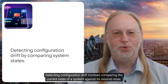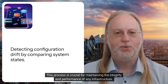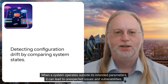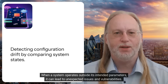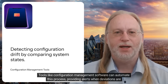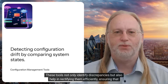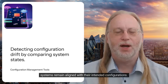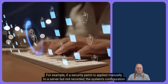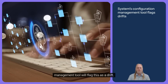Detecting configuration drift involves comparing the current state of a system against its desired state. This process is crucial for maintaining the integrity and performance of any infrastructure. When a system operates outside its intended parameters, it can lead to unexpected issues and vulnerabilities. Tools like configuration management software can automate this process, providing alerts when deviations are detected. For example, if a security patch is applied manually to a server but not recorded, the system's configuration management tool will flag this as a drift.